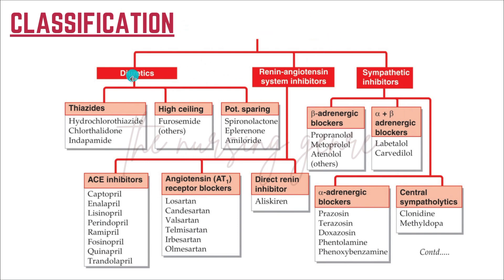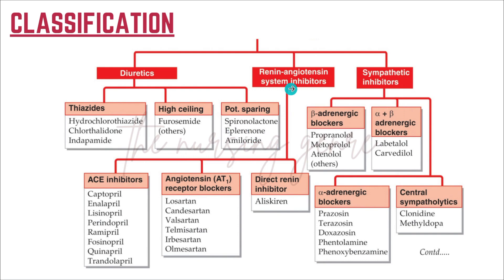The classification includes: diuretics and renin-angiotensin system inhibitors and sympathetic inhibitors. Under diuretics, there are thiazides: hydrochlorothiazide, chlorthalidone, indapamide. High ceiling diuretics: furosemide. Potassium-sparing diuretics: spironolactone, eplerenone, amiloride.